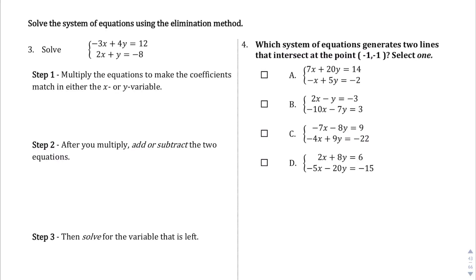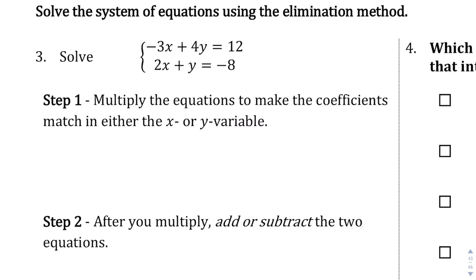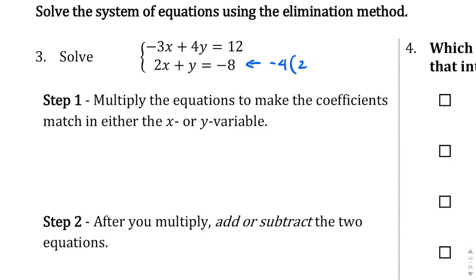Taking a quick cursory glance at these two equations here, let me zoom in. I am going to actually work with the y's, because I can tell if I just multiply the bottom equation by negative 4, it can change the whole thing to eliminate the y's. A lot easier than multiplying the top by 2 and bottom by 3. So let's go ahead and multiply this by negative 4. So I'm going to multiply negative 4 times 2x plus y equals negative 8. When I do that, I end up with negative 8x minus 4y equals positive 32.